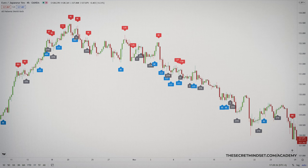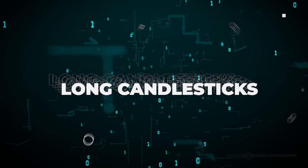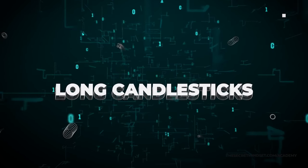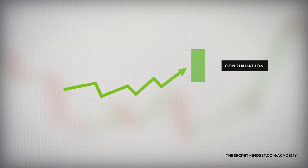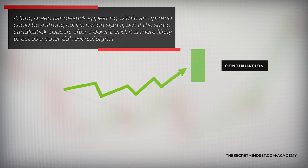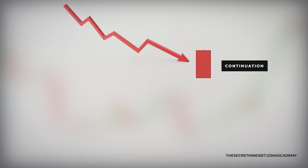So let's simplify candlestick trading. Among the dozens of candlestick formations, there are six basic candlestick types. The long candlestick indicates a lot of momentum among buyers or sellers. The lack of shadow indicates exceptional strength for one side or the other. A long candlestick may have no shadows, or a small one at the top or at the bottom of the real body. The significance of the long candlestick relies completely on its location. For example, a long green candlestick appearing within an uptrend could be a strong confirmation signal, but if the same candlestick appears after a downtrend, it is more likely to act as a potential reversal signal. The same is true for long red candlesticks.